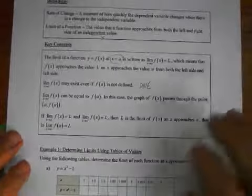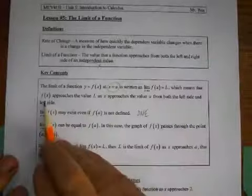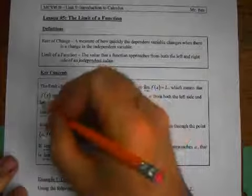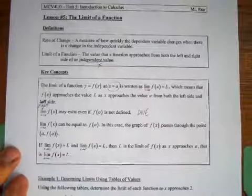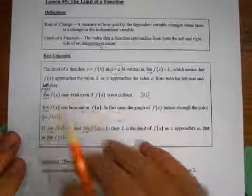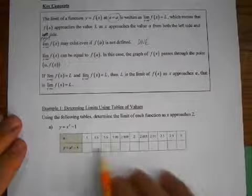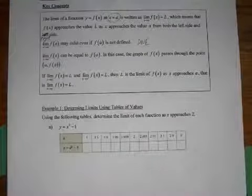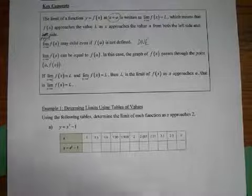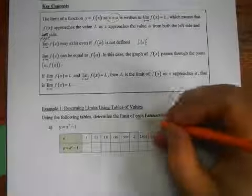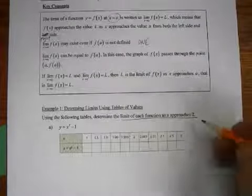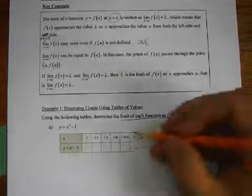Let's do some examples. We've got a function here — there was a little mistake, the second side should say right side, not left side and left side. We have a table of values for the function y equals x squared minus one, and what we're trying to find is the limit as x approaches two.